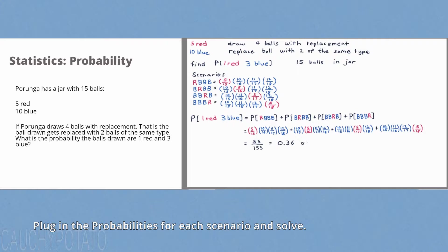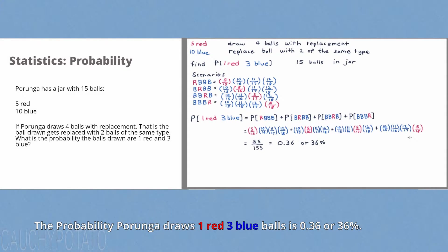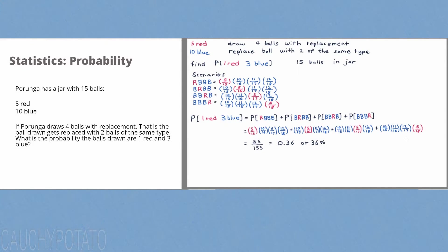The result is 0.36, or 36%. So the probability Poronga draws one red and three blue balls — where the drawn ball is replaced with two of the same kind each draw — is 0.36 or 36%. Hope this video helps. Thanks for watching.